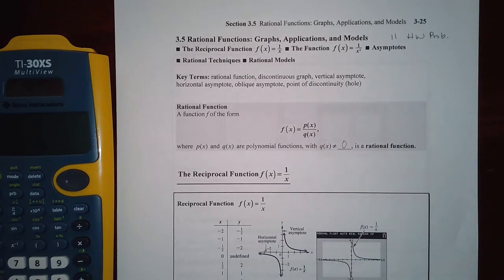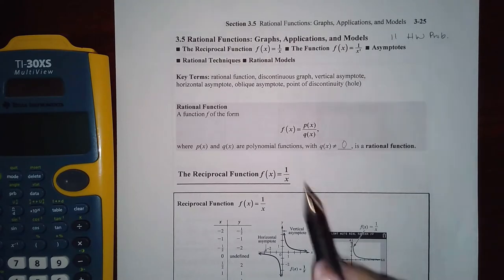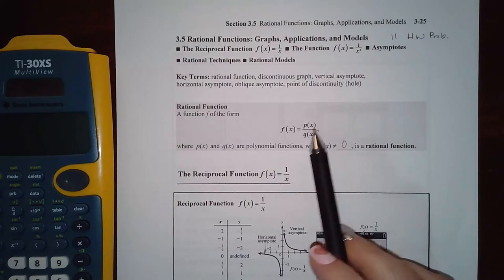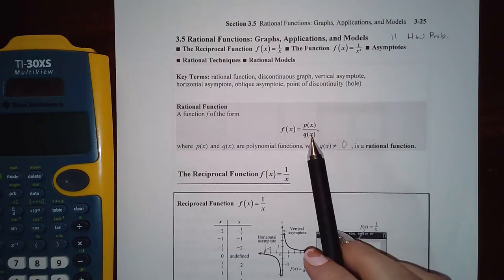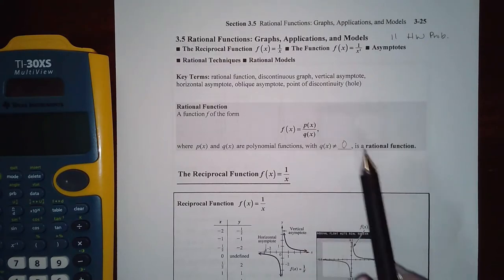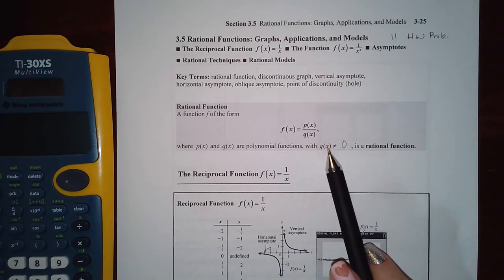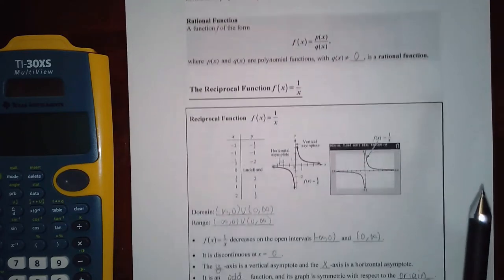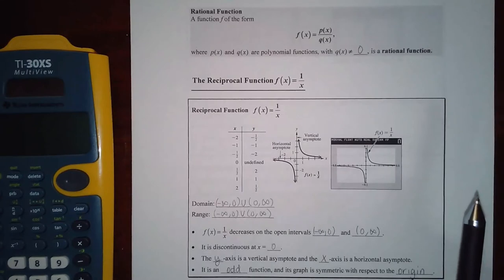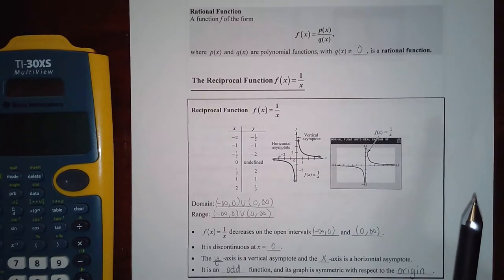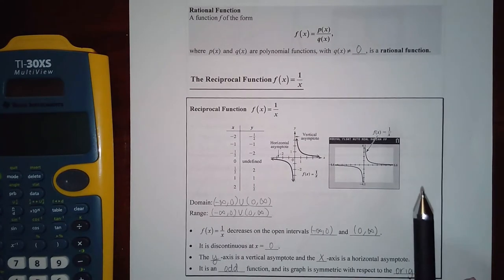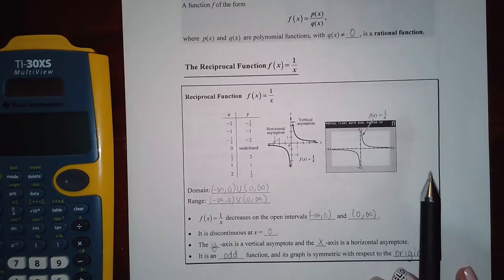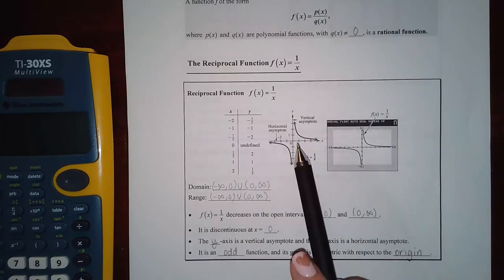This section is over rational functions. Rational functions are basically just fraction functions — you'll have a polynomial in the numerator and another polynomial in the denominator, and you have to make sure that your denominator does not ever equal zero. The basic rational function is 1 over x.